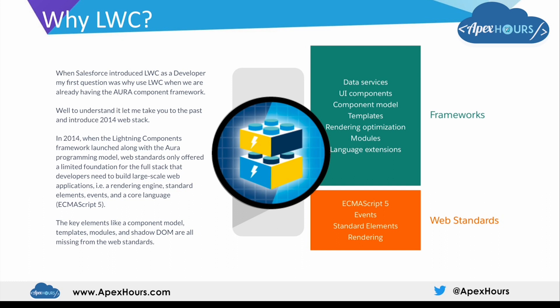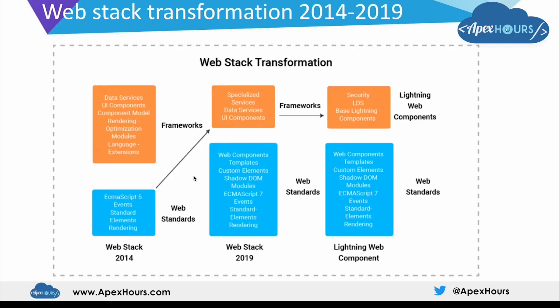Between 2014 and 2019 there was a good transformation of web standards. Templates, custom elements, Shadow DOM, and modules all became part of the web stack itself. This means the latest web stack is powerful enough to help us create UI components - we don't need a thick framework layer in between, which could harm component performance or make it complex to build. That's the reason behind introducing the Lightning Web Component framework. Most features of LWC are part of the web stack itself and only a few things depend on the framework.